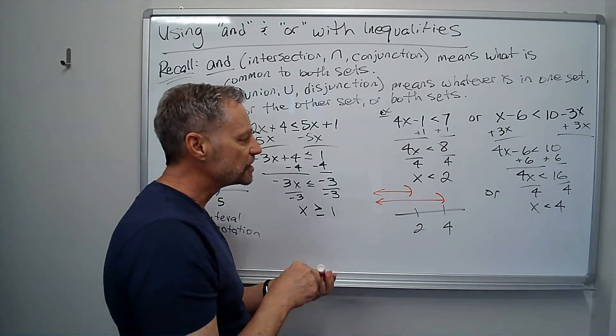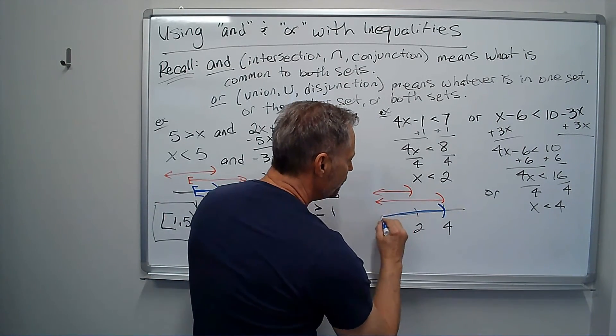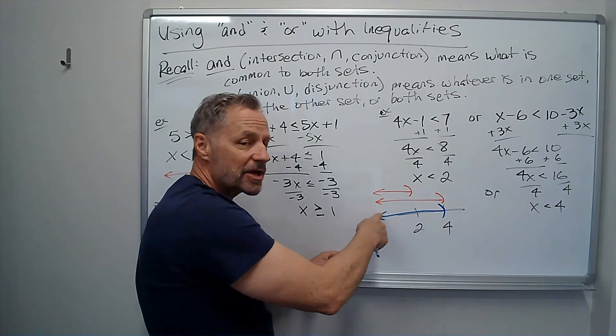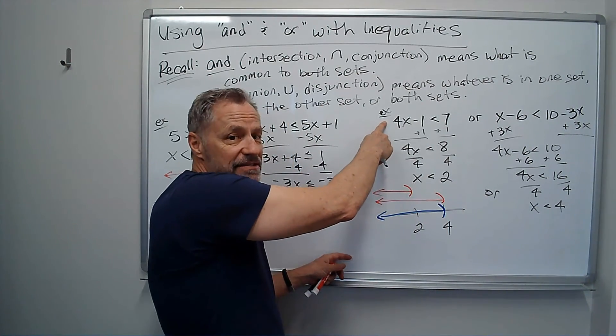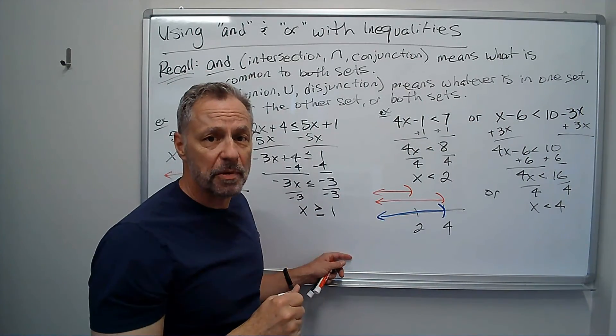So my answer, since it's an or, is going to be everything from 4 to the left. Because every value in there is going to satisfy this inequality, or that inequality. Or, some of them will solve both.